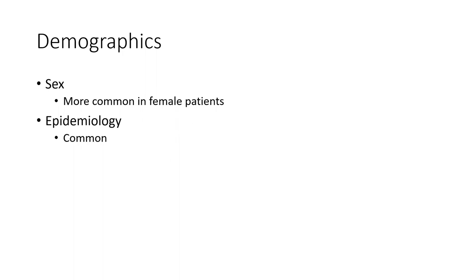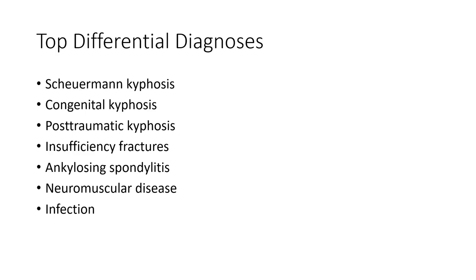Epidemiology: it is common. Differential diagnosis includes Scheuermann kyphosis, congenital kyphosis, post-traumatic kyphosis with insufficiency fracture, ankylosing spondylitis, neuromuscular disease, and infection.